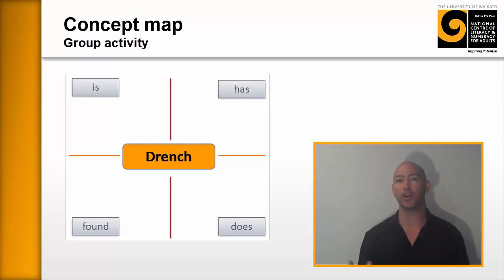We're going to take a word that we want to learn about and the word in this example is going to be drench. So we're drenching animals in the agriculture context. Now we'd write drench in the middle of the page. And in the top right hand corner, we'd have a prompt.